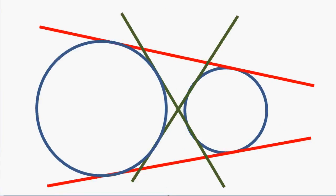With the two circles apart, now we can draw four common tangents to the two circles. These red lines are known as the external tangents, and these green lines are known as the common internal tangents.